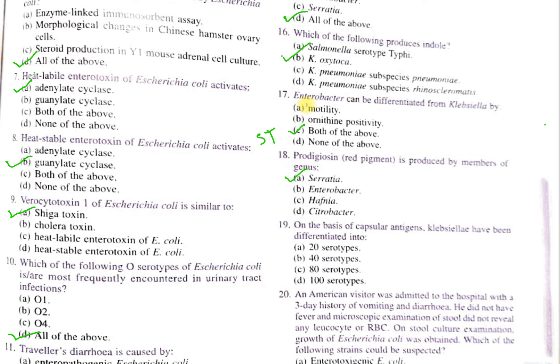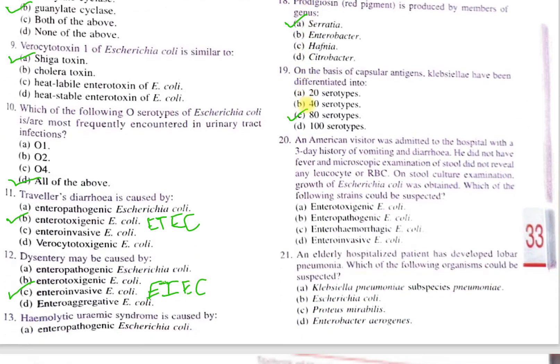Question number 19: on the basis of capsular antigens, Klebsiella have been differentiated into — A. 20 serotypes, B. 40 serotypes, C. 80 serotypes, D. 100 serotypes. The correct option is C, 80 serotypes.